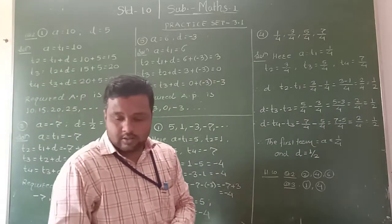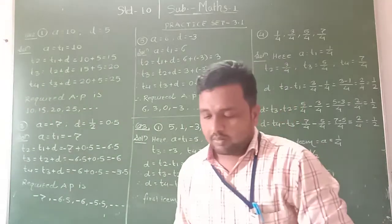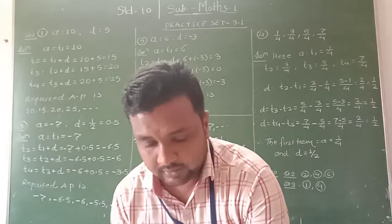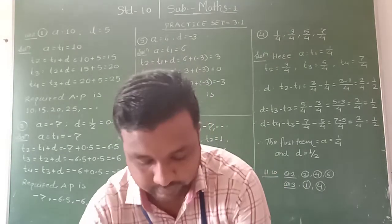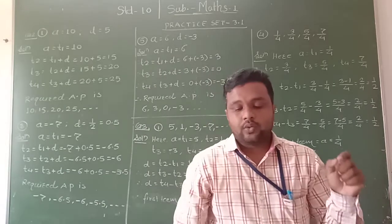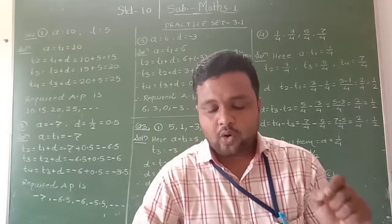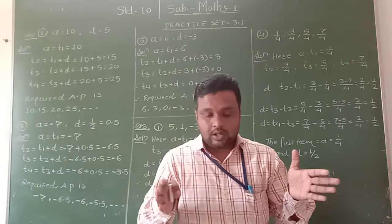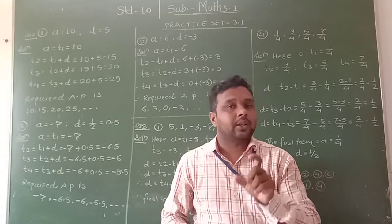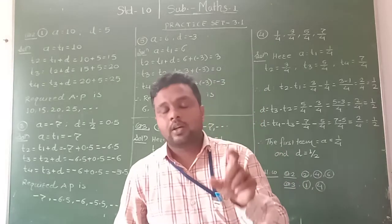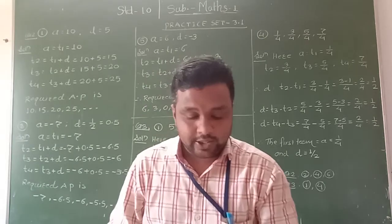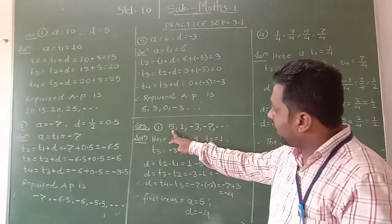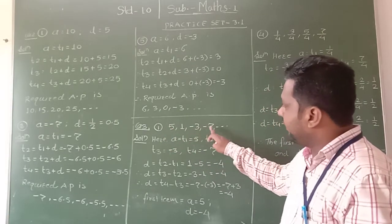Now we see the third question. The question is: find the first term and common difference for each of the following arithmetic progressions. In this question, the arithmetic progression is given, and from that we have to find the first term and the common difference. The first example gives the arithmetic progression: 5, 1, minus 3, minus 7, and so on.